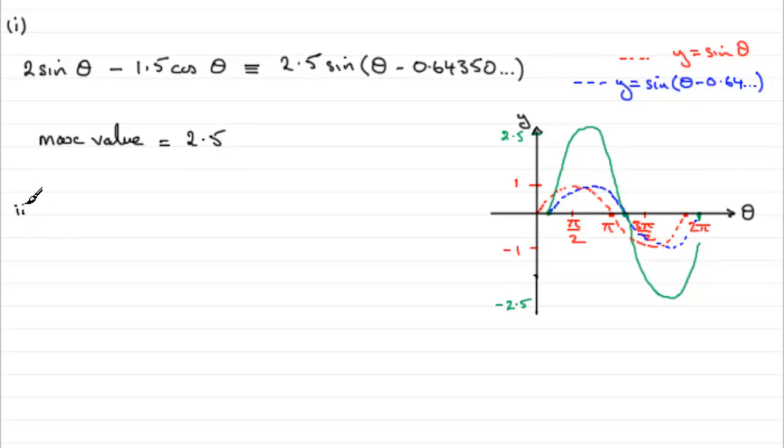Now, in part two, they ask us to find out the value that theta would be that gives us this maximum value. Well, you can either do it just simply from the graph or you can see that what we need to have here is a value of pi upon 2 because when you do the sine of pi upon 2, you get your maximum, which used to be 1.